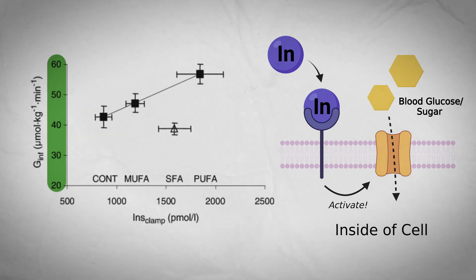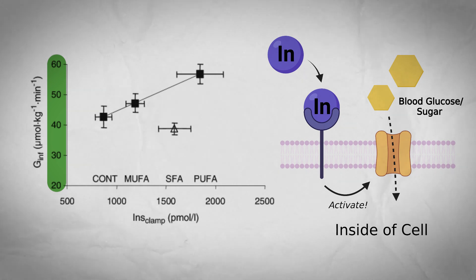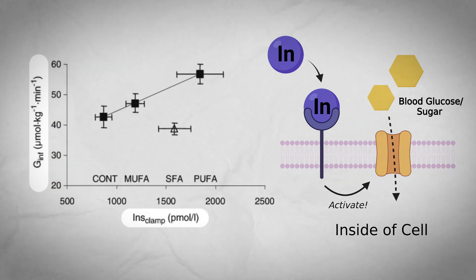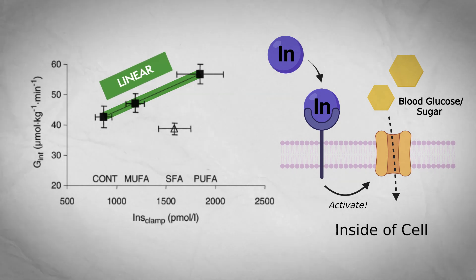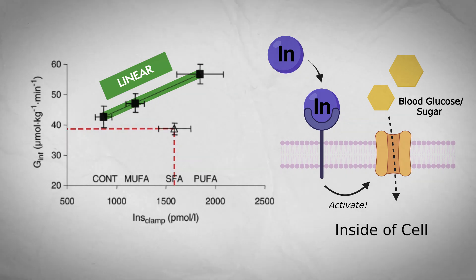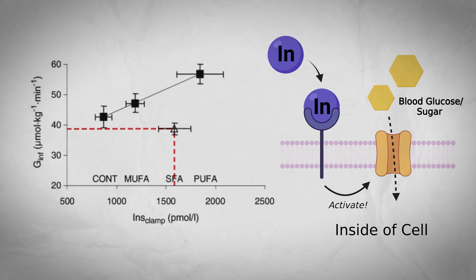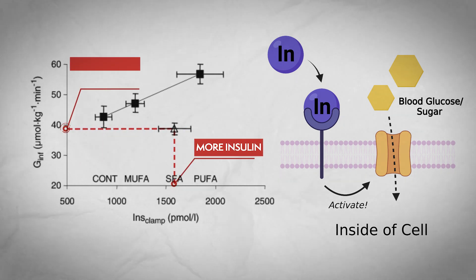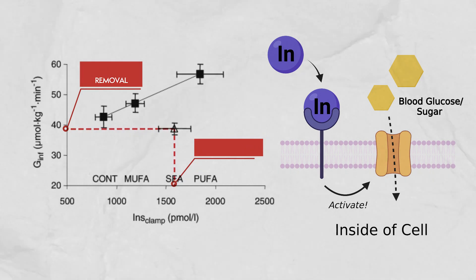On the vertical axis there's the measure of glucose infusion, which is a proxy measure of sugar clearance from the blood. The control, monounsaturated fat, and polyunsaturated fat conditions showed a linear relationship — increasing insulin concentrations led to greater disposal of sugar from the blood, consistent with being more insulin sensitive. However, the saturated fat condition shows that at higher insulin levels you get less sugar clearance, essentially less bang for your buck. Both studies show congruent results: unsaturated fats at least maintain insulin sensitivity, but saturated fat exposure reduces it.